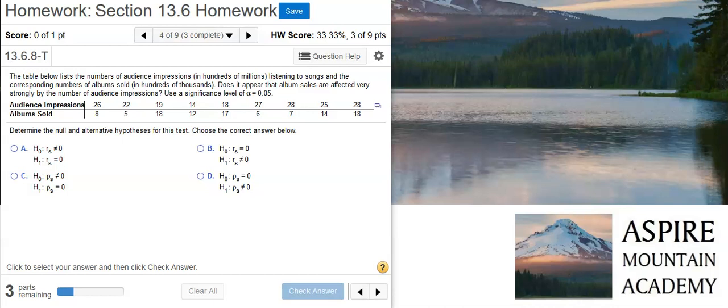Here's our problem statement. The table below lists the numbers of audience impressions in hundreds of millions listening to songs and the corresponding numbers of albums sold in hundreds of thousands. Does it appear that album sales are affected very strongly by the number of audience impressions? Use a significance level of alpha equals 0.05.